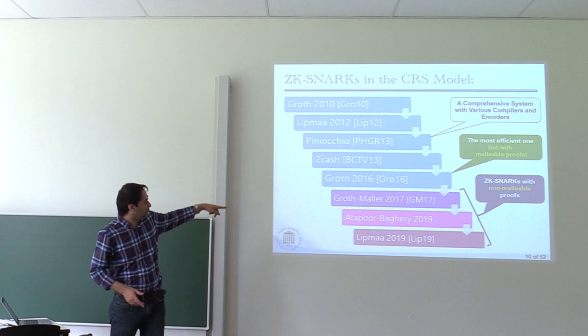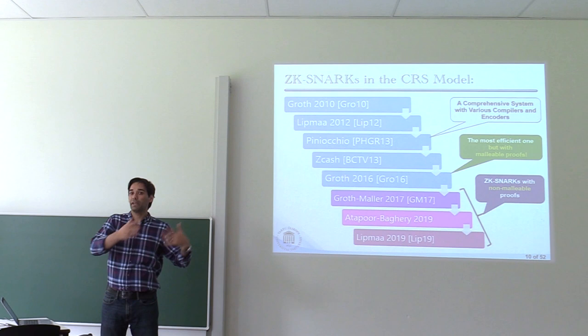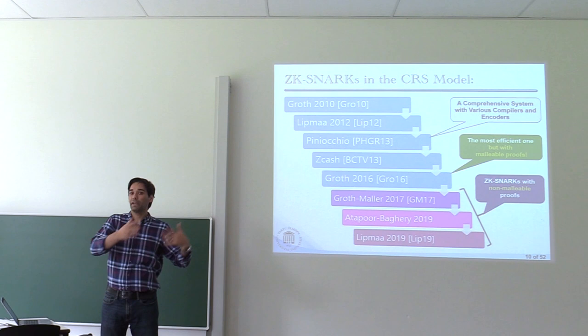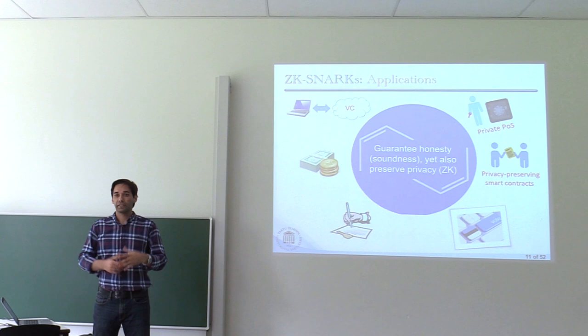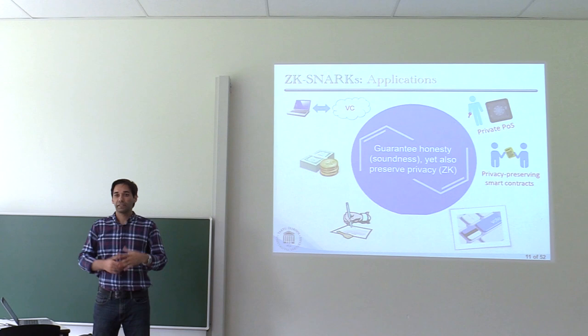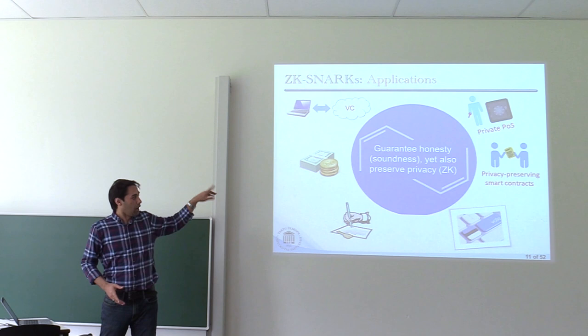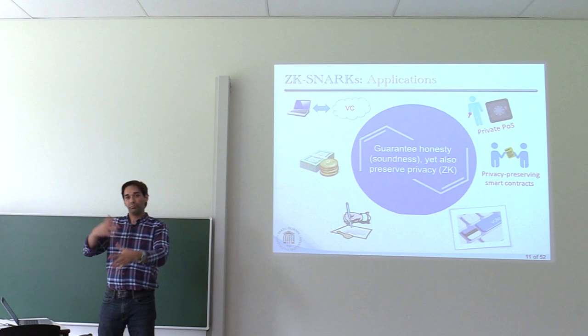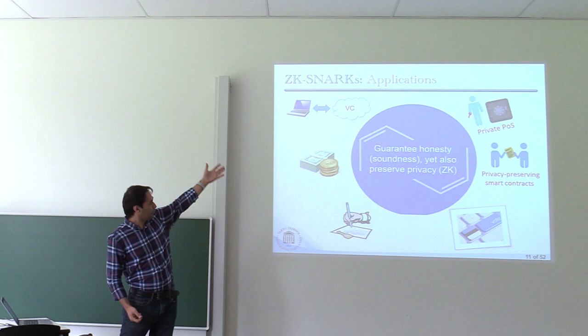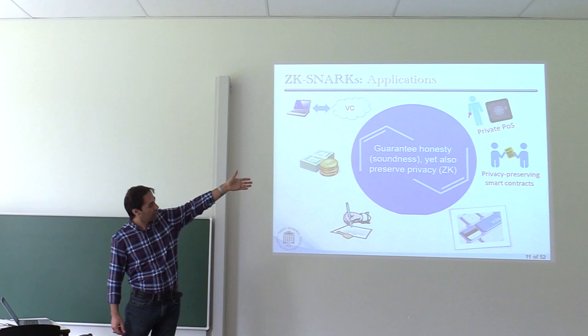In Shahla's thesis we got interested in presenting a new version of Groth16 that guarantees non-malleability of proofs and is better than Groth-Maller, which was the only available SNARK guaranteeing non-malleability. Due to the very nice properties of ZK-SNARKs, they have appeared in various applications including verifiable computation, Zcash as a privacy-preserving coin, digital signatures, e-voting, privacy-preserving smart contracts, and recently private proof-of-stake. In all of them something is in common: computation.